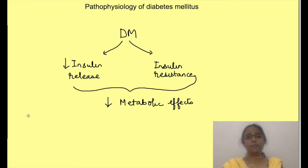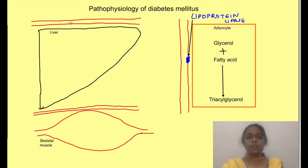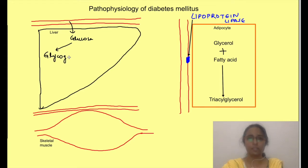So let's first see in brief the actions of insulin, which are mainly targeted to reduce the concentration of glucose, fatty acids and amino acids in blood during the fed state when their concentration in blood rises. In the liver, insulin promotes the conversion of glucose to glycogen, i.e. glycogenesis, and also to fats, i.e. lipogenesis.